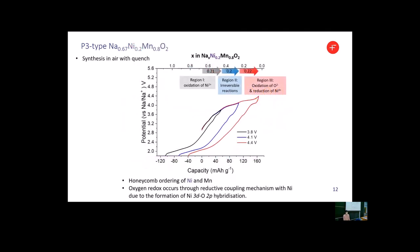So far, we've seen that transition metal vacancies are essential to stabilize oxygen redox. Now, I'd like to show you another mechanism to activate oxygen redox observed for 20% nickel-doped sodium manganese oxide. This sample was prepared in air with quench and exhibits honeycomb ordering between nickel and manganese.